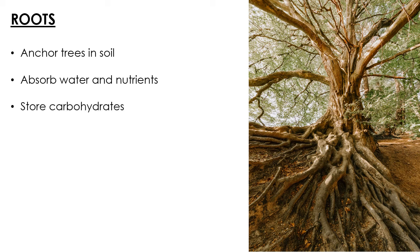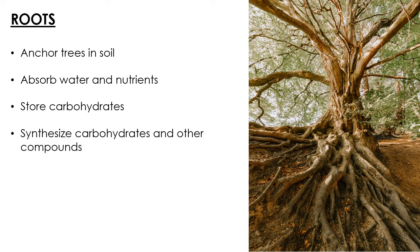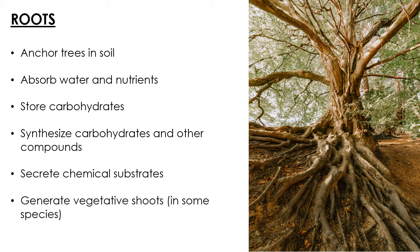They store carbohydrates — many species of trees store a lot of their sugars that are produced in the leaves, which are sent down to the roots where they're synthesized into carbohydrates and stored there. The roots also synthesize a bunch of other compounds too. They also secrete chemical substrates — sometimes they'll secrete things into the soil or into their own cells. And in some species, they'll generate vegetative shoots, so species that can re-sprout after disturbance from the root collar, or trees that generate vegetatively — roots can come out, penetrate the soil, and grow vegetative shoots.